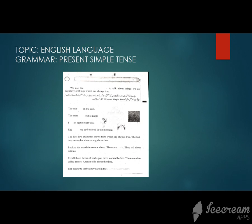We use the present simple tense to talk about things we do regularly and things which are always true. Now we will tell you present simple tense, we tell about what we do daily, regularly. We will tell you present simple tense.